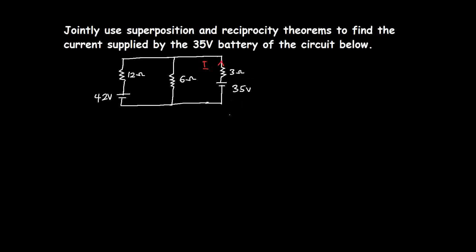We are going to apply the same approach here. I'll consider one of the voltage sources acting alone — in this case the 42-volt source — which means I have to short-circuit or remove the 35-volt source. Let's look at how the circuit will appear now.